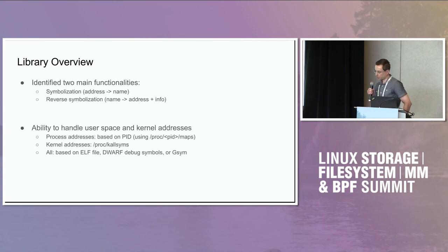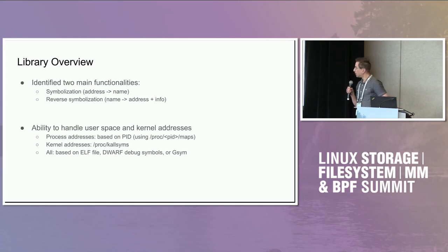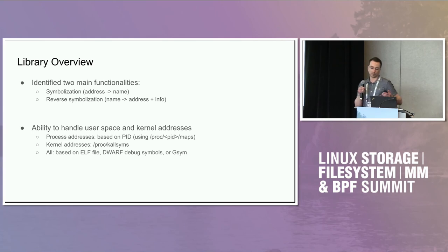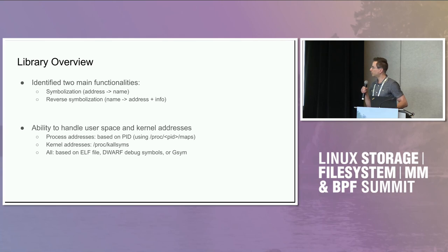On top of that, one consideration the library has to handle is both user space and kernel space addresses. These are handled slightly differently on different operating systems, and we want to make this transparent to users so they don't have to worry about it or use different libraries. For both, we would still support ELF, DWARF, and GSYM as backends or sources for the actual symbolization.